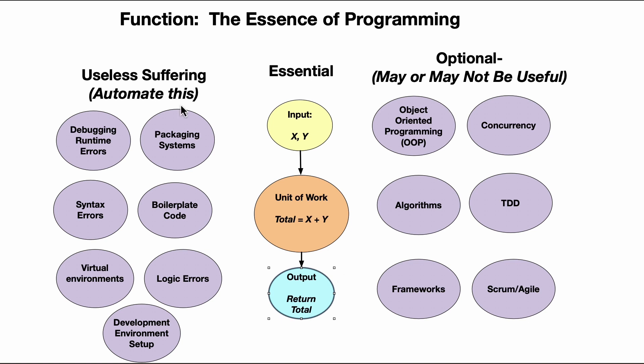First, let's look at useless suffering — things you should automate. Debugging runtime errors is not something you should be doing manually. When you first start programming you get overwhelmed thinking you're making all these mistakes. In programming, everything is broken all the time, but the role of a programmer is to fix this with automation — using continuous integration, makefiles, good linting tools, or potentially Copilot or another coding assistant.